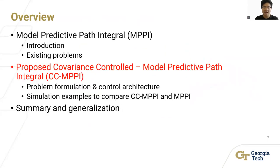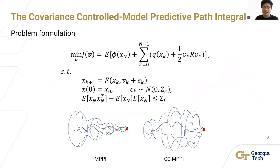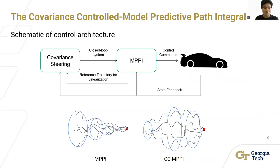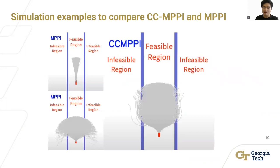The proposed CCMPPI can alleviate the situation. The CCMPPI adds a covariance constraint to the terminal state of the prediction horizon. While the MPPI has a fixed trajectory sampling distribution, the CCMPPI's sampling distribution is more flexible. The idea of CCMPPI is to utilize covariance steering to produce a closed-loop system and let MPPI sample trajectories with a closed-loop system instead of an open-loop system. As a comparison, the CCMPPI is able to concentrate its sampling distribution inside the feasible region, thus increasing the sampling efficiency.